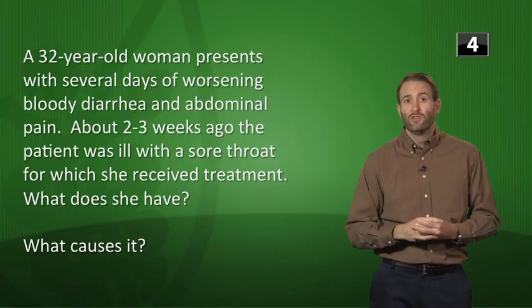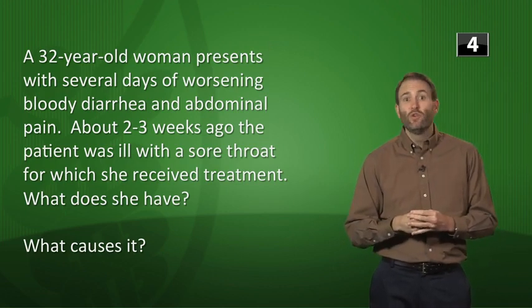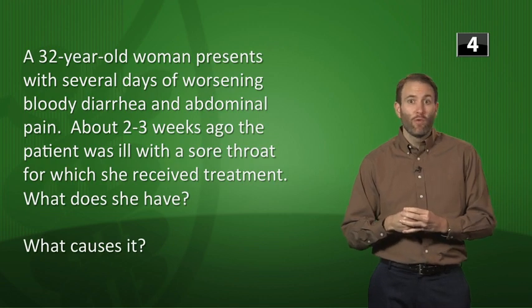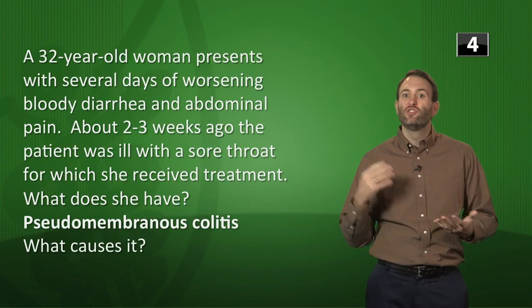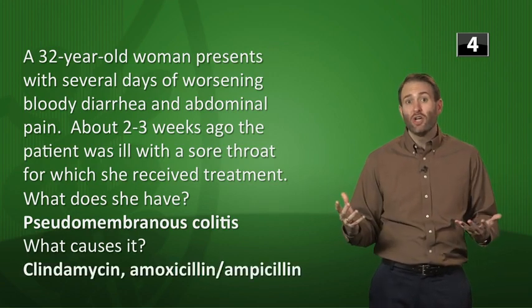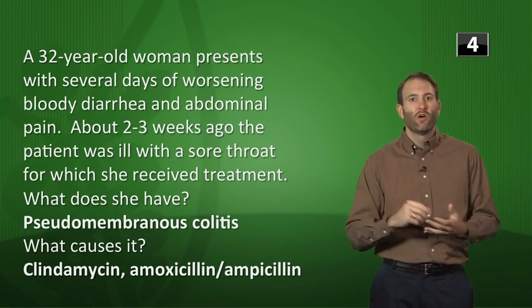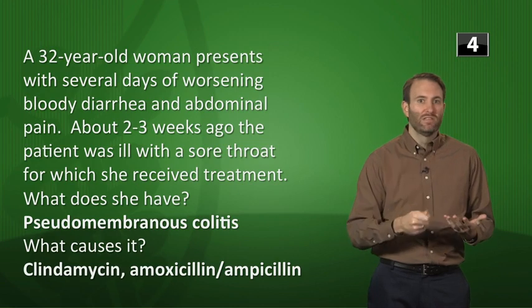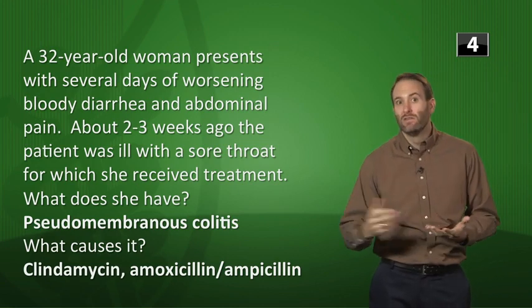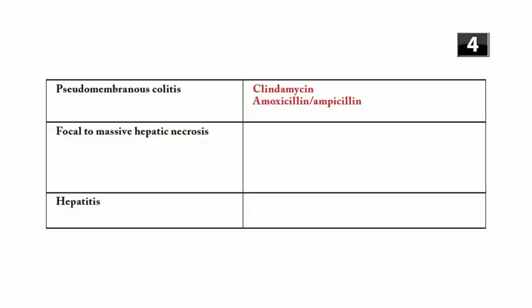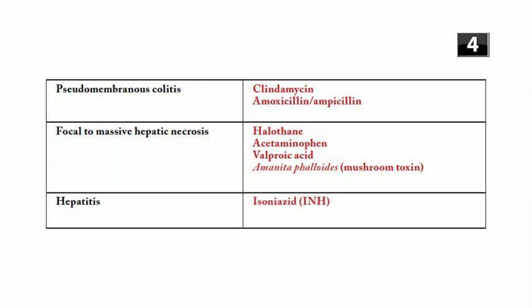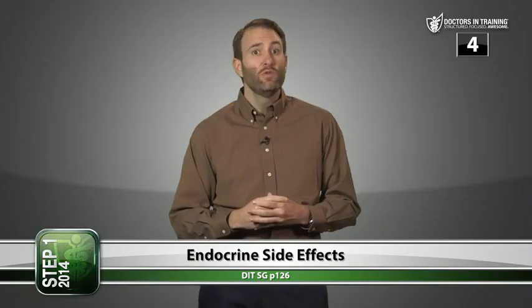GI vignette: a 32-year-old woman with bloody diarrhea after antibiotic use two to three weeks prior — this is pseudomembranous colitis. Any antibiotic can cause it, but the most tested are clindamycin and aminopenicillins like amoxicillin or ampicillin. Hepatic necrosis is seen with excess halothane, excess acetaminophen, valproic acid, and Amanita phalloides mushroom toxin. Plain hepatitis: think isoniazid.